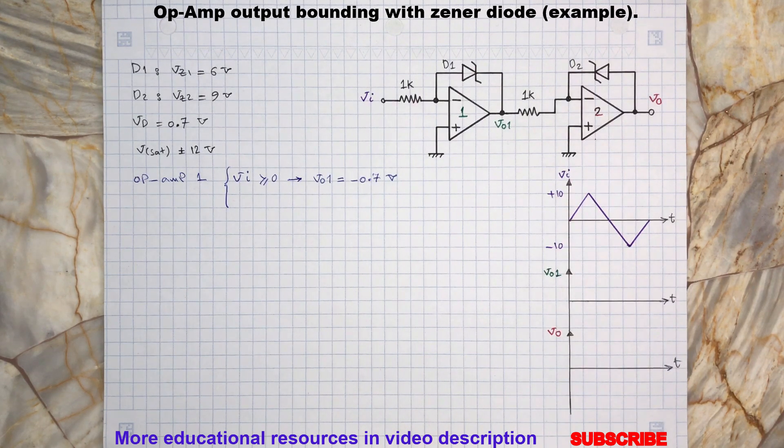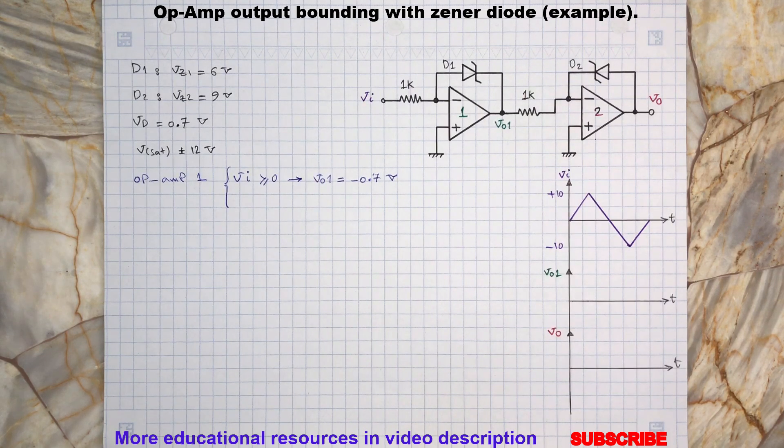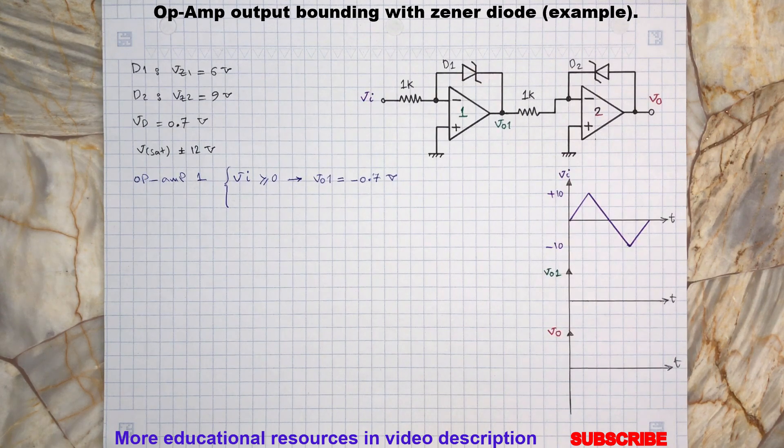The output V01 will swing to its positive saturation limit, which is positive 12 volts. This will put the zener diode D1 in reverse bias, and since the op-amp output saturation limit is positive 12 volts, the zener diode will be at its breakdown region.